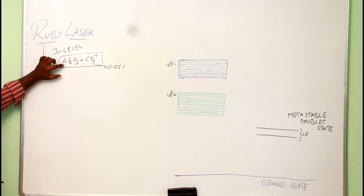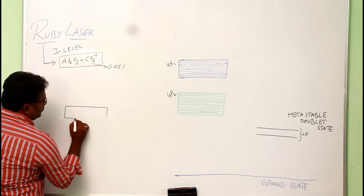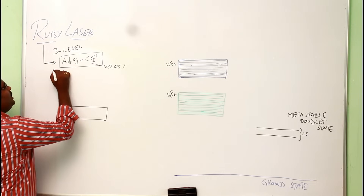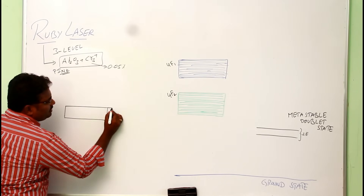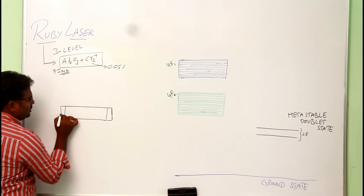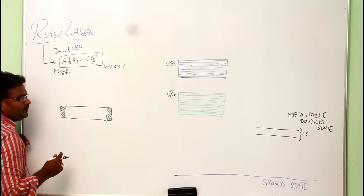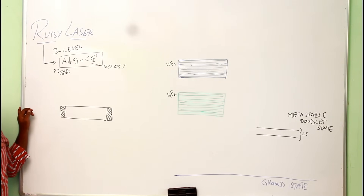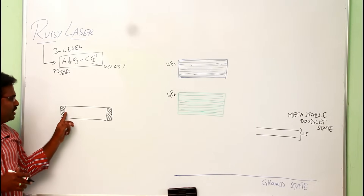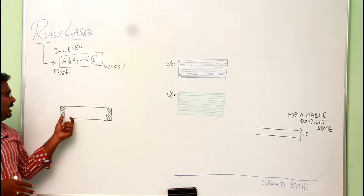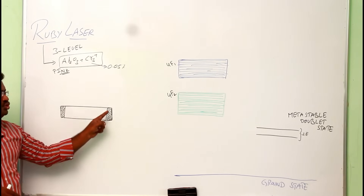The active medium is Al2O3 doped with Cr3+. The ruby rod is pink in color. We keep the active medium between two mirrors — one is 100% silvered and the other is less than 100% silvered. Unlike He-Ne laser which is gaseous and requires external mirrors, here since it is a solid, we simply polish both ends and paint one end with 100% silver and the other with less than 100% silver.